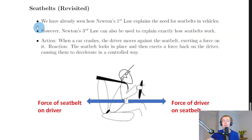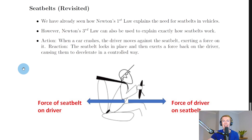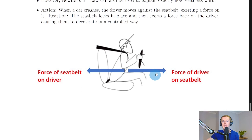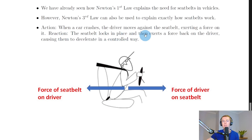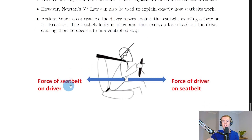We're going to revisit seat belts in terms of Newton's Third Law. We've already seen how Newton's First Law explains the need for seat belts in vehicles; however, Newton's Third Law can also be used to explain exactly how seat belts work. We'll think about this in terms of the action and reaction forces. The action force is when a car crashes - the driver moves against the seat belt, exerting a force on it.